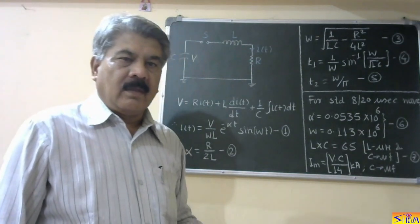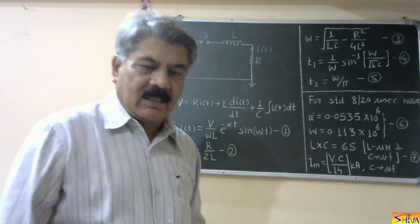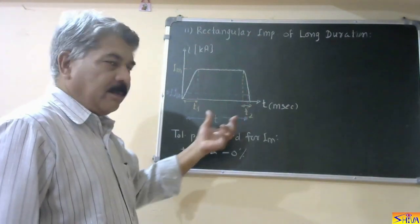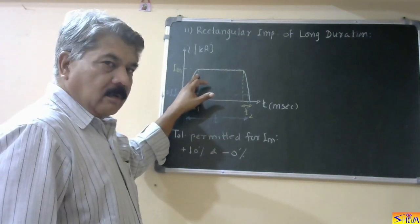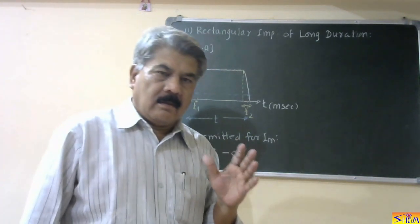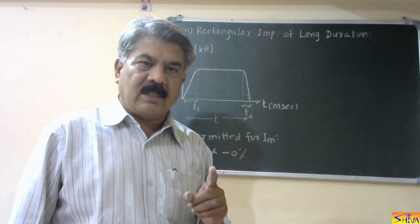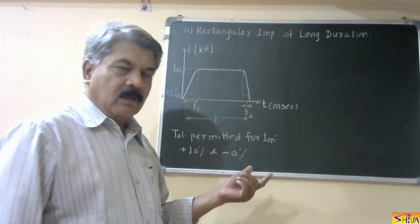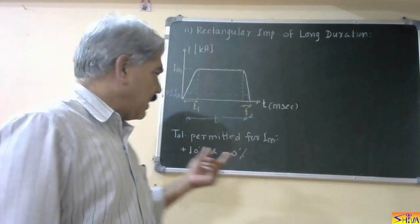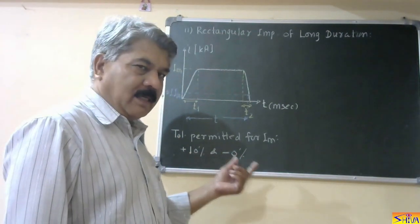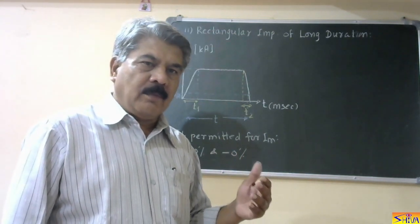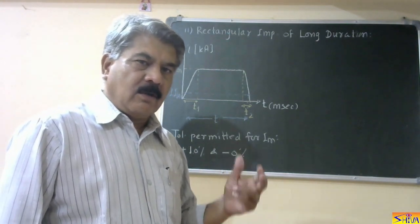Now let us see how the impulse current of rectangular shape — that is, long duration — is generated. The rectangular impulse of long duration has a magnitude that increases, remains constant for some duration, then decreases. The peak value is Im. The tolerance permitted for the peak value is plus 10 percent and minus zero percent. So if we need to generate a rectangular impulse of 1 kiloampere, the peak value should not be less than 1 kA but can go up to 1.1 kA.